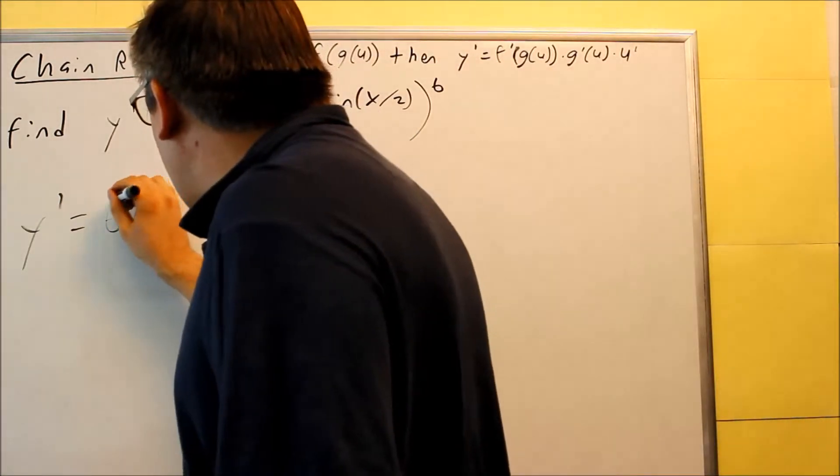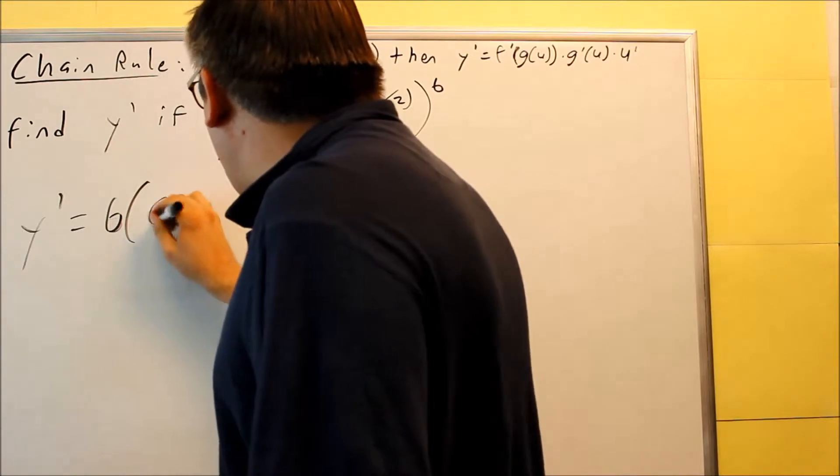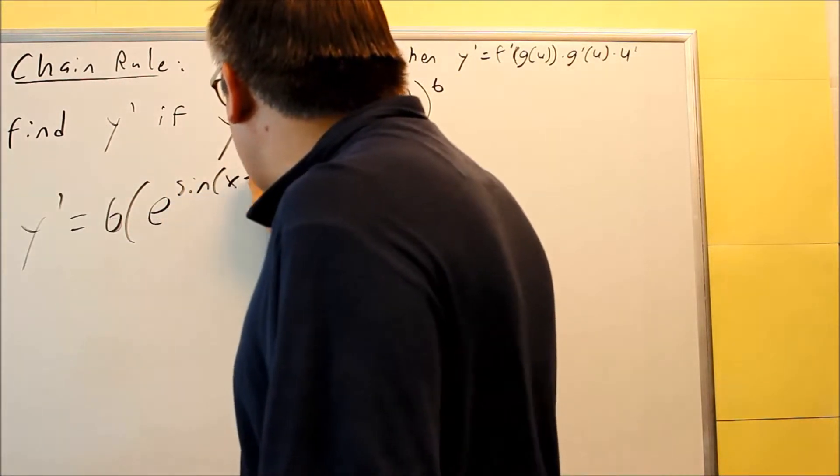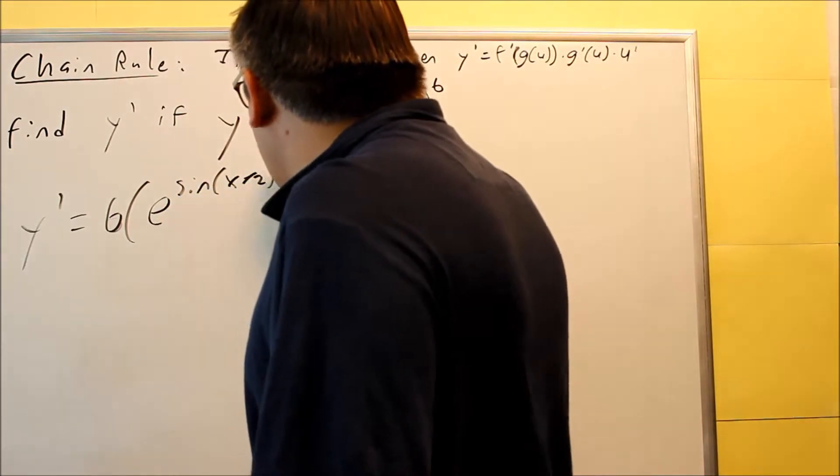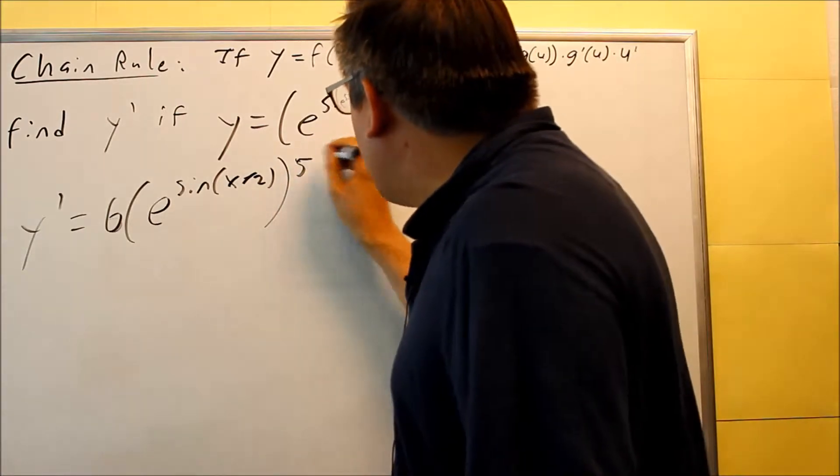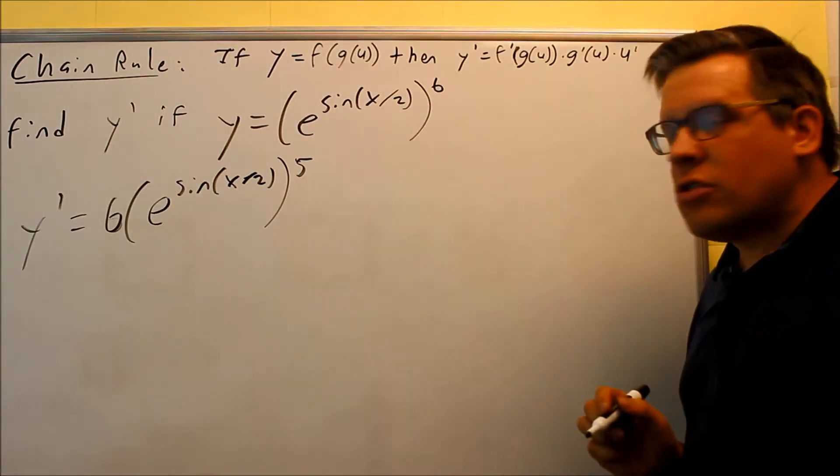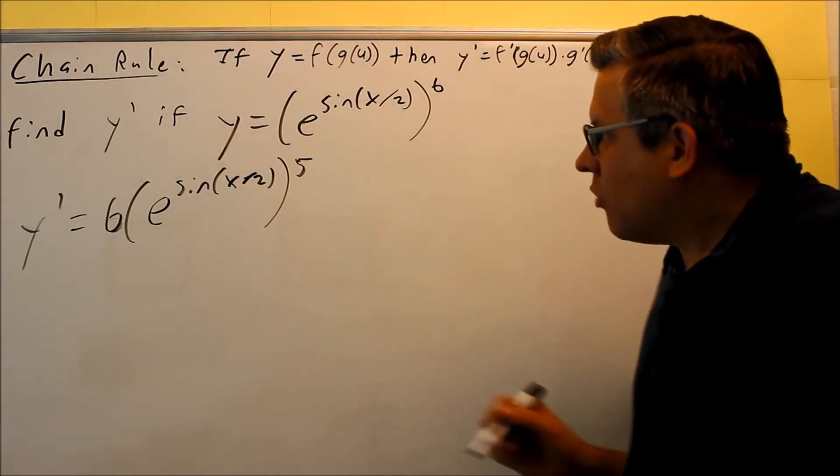So something to the 6 power means I can use the power rule. The 6 is going to come down and then I have all this I have to write on the inside. And then that's going to be to the 5th power. So 6 comes down, subtract 1 and you get this. That takes care of the outside one.